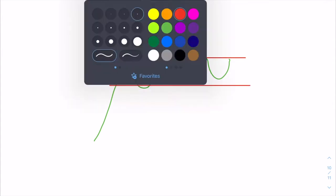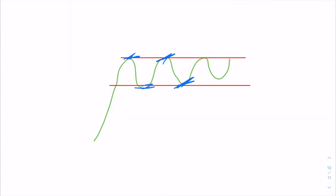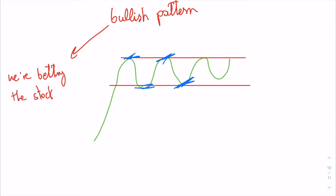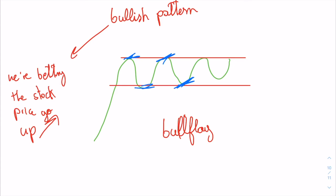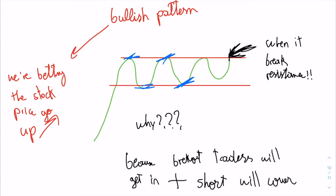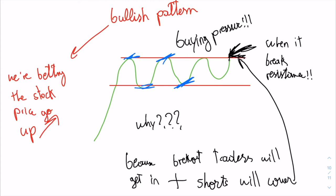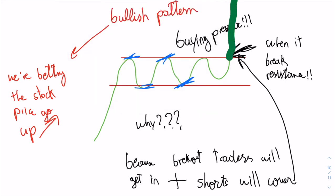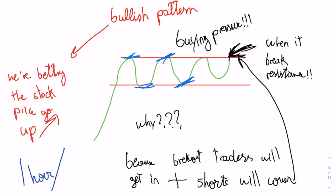Here's the bull flag pattern. It's basically the stock price going up and moving between a support and resistance. On a bull flag, we're betting the stock price will go up — you should buy at the breakout, when it breaks the resistance. Why do we need to buy when it has a high short float? Because breakout traders will get in and shorts will start covering, creating massive buying pressure. With all this buying pressure from the shorts and the breakout traders, this will create a short squeeze. We're trading this on a daily or one-hour time frame.